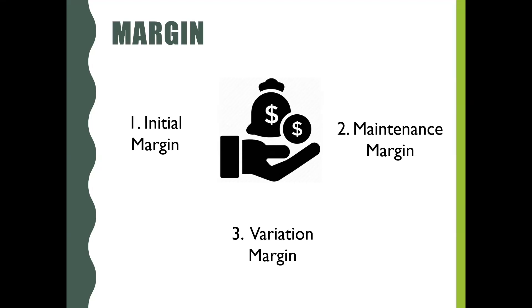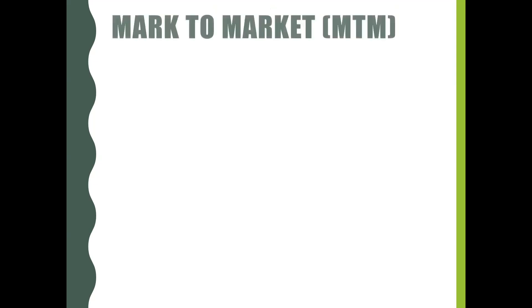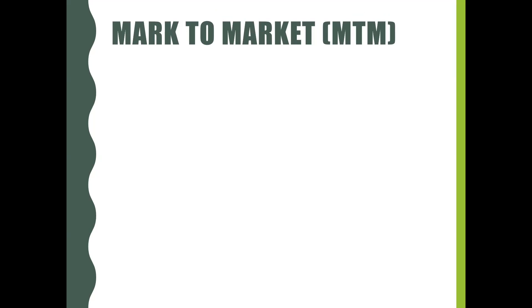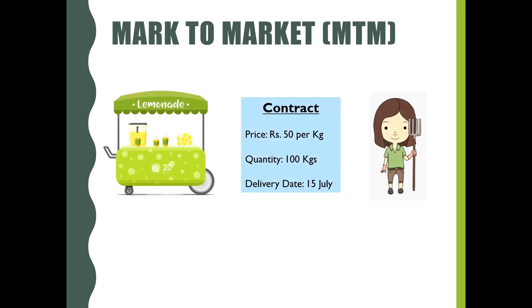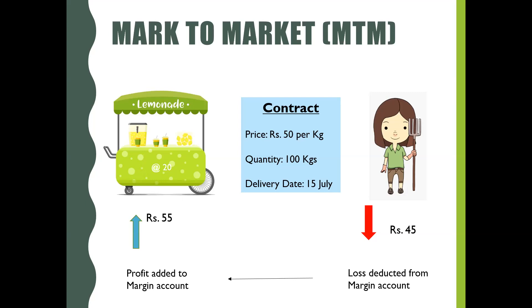What makes the margin account balance increase or decrease? There is a process called mark-to-market, which records the value of the security on a daily basis to calculate profits or losses and confirms that margin requirements are being met. For example, if both parties enter a contract at 50 rupees and the next day the price increases to 55 rupees, the lemonade vendor is in profit. The profit amount is transferred from the lemon farmer's margin account to the lemonade vendor's margin account. This daily settlement of gain or loss continues until the expiry date of the contract.